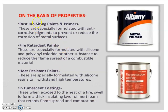Other types of paints based on properties or additives include: rust-inhibiting paints and primers, which inhibit rust and act as anti-corrosive agents because they have anti-corrosive pigments. Fire-retardant paints are specially formulated with silicone, iron, and PVC (polyvinyl chloride) or other substances to reduce the flame spread of combustible materials. Heat-resistant paints are specially formulated with silicone resins to withstand high temperatures. Intumescent coatings, when exposed to heat or fire, swell to form a thick insulating layer of inert foam, acting as a protective layer.